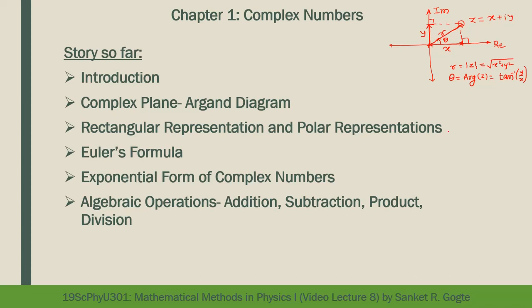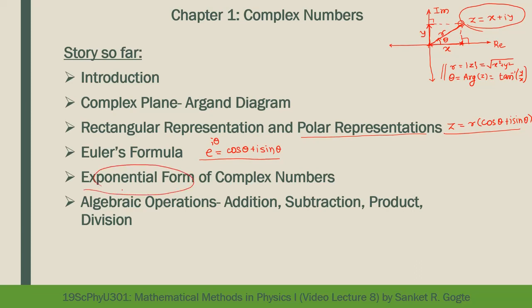There are three ways to represent a complex number. The first is z = x + iy, called the rectangular representation. The second is polar representation using r and θ: z = r(cosθ + i sinθ). Then we derived Euler's formula, e^(iθ) = cosθ + i sinθ, and using it in the polar form gives the third representation — the exponential form z = re^(iθ), which is very useful.